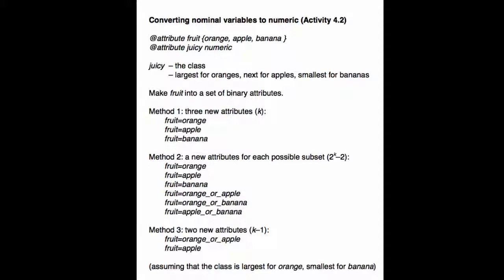Okay, so let's just consider ways of making fruit into a set of binary attributes. So the simplest method, and the one that's used by the unsupervised conversion filter, is method 1 here. We create three new binary attributes. I just call them fruit equals orange, fruit equals apple, fruit equals banana. And the first attribute is 1 if it's an orange and 0 otherwise. The second attribute, fruit equals apple, is 1 if it's an apple and 0 otherwise. And the same for banana. So, of course, of these three binary attributes exactly one of them has to be 1 for any instance.